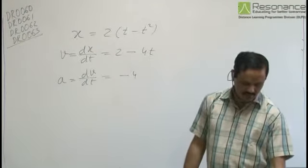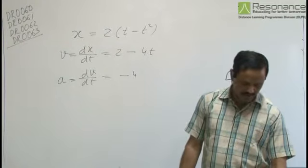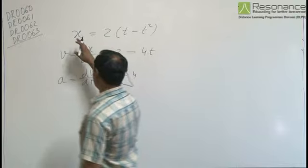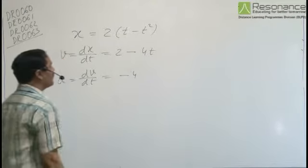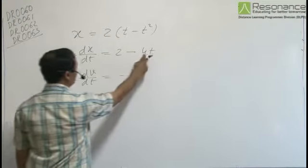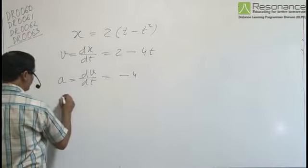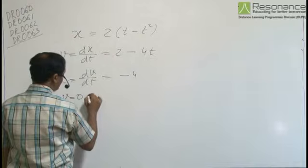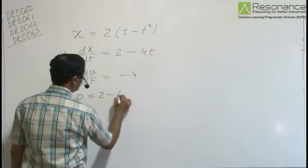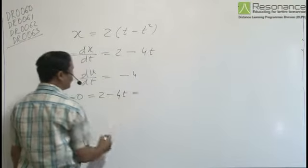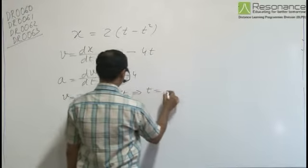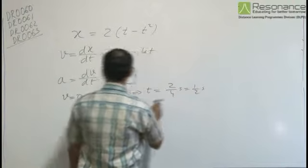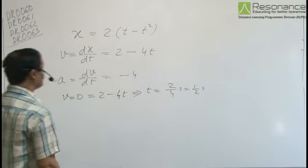Now, the maximum value of the position coordinate of the particle on the positive x-axis. The particle will continue to move along the positive x-axis until its velocity becomes zero. So velocity equals zero when 2 - 4t = 0, which gives t = 2/4 = 0.5 seconds. So at half a second, velocity becomes zero.